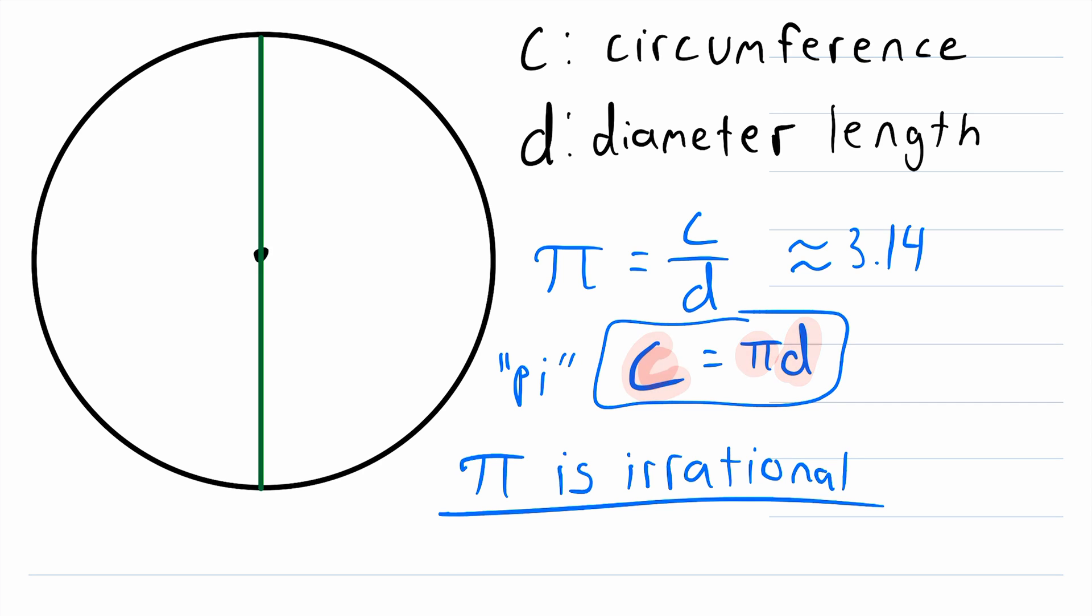So for example, let's say that the diameter length of this circle is 6 centimeters. Then the circumference of this circle is equal to pi multiplied by that diameter length of 6 centimeters, which we'll generally want to write as 6 pi centimeters.